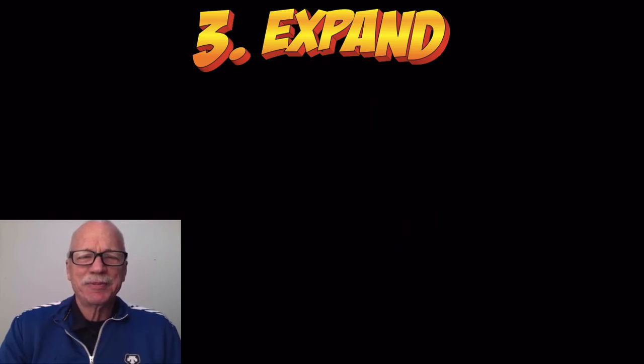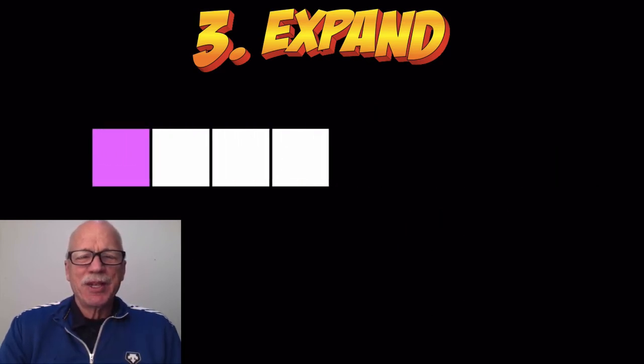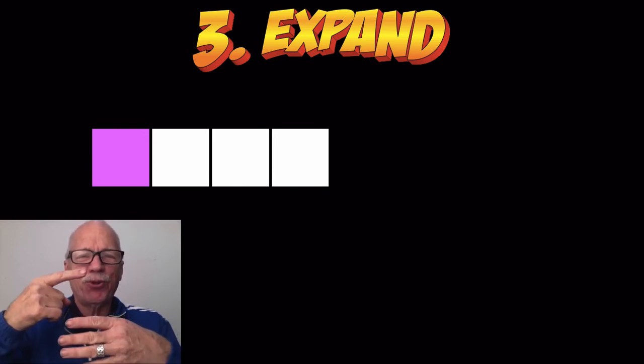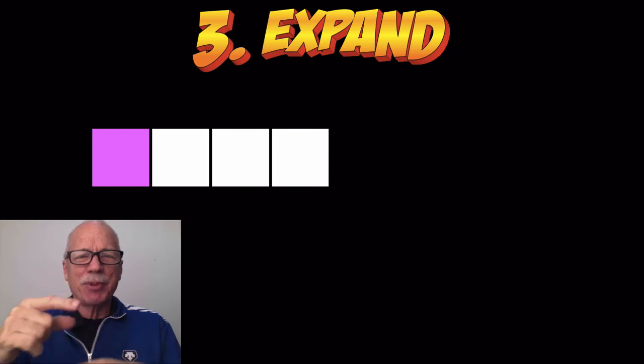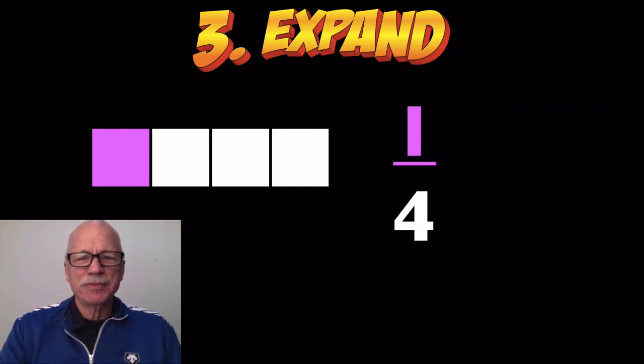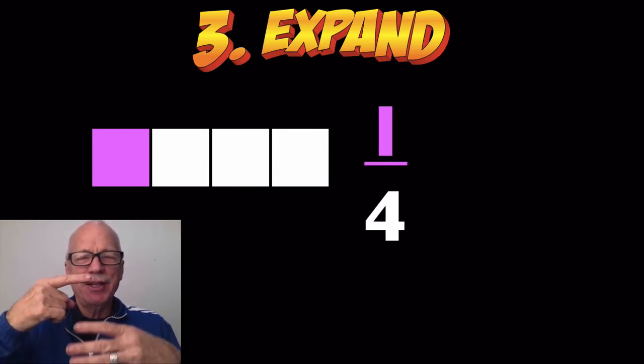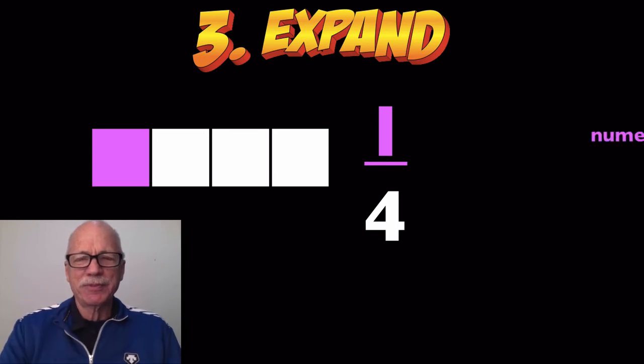Again. Four squares. One is purple. One of the four squares is purple. Here's the fraction. One of four. One, numerator. Four, denominator.